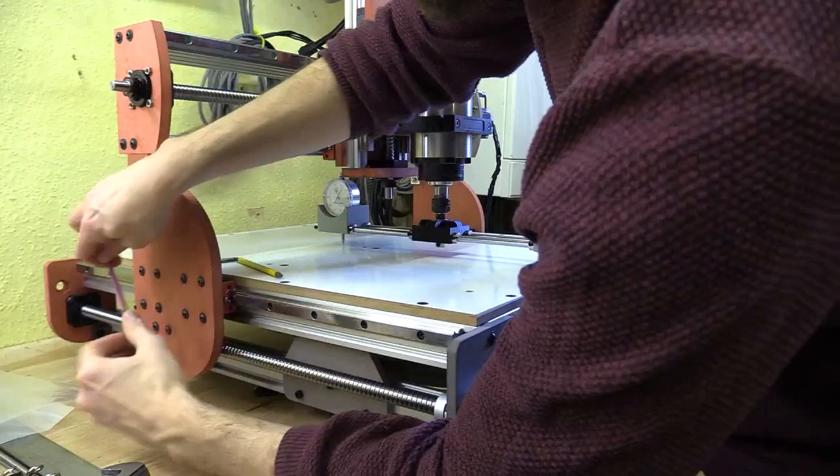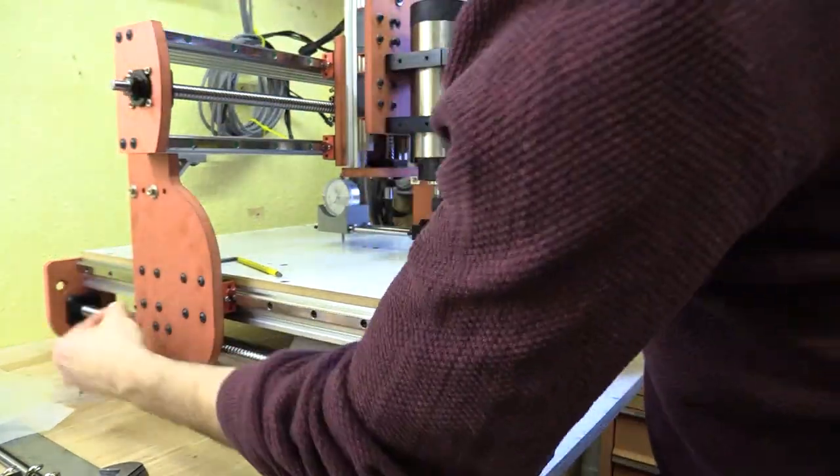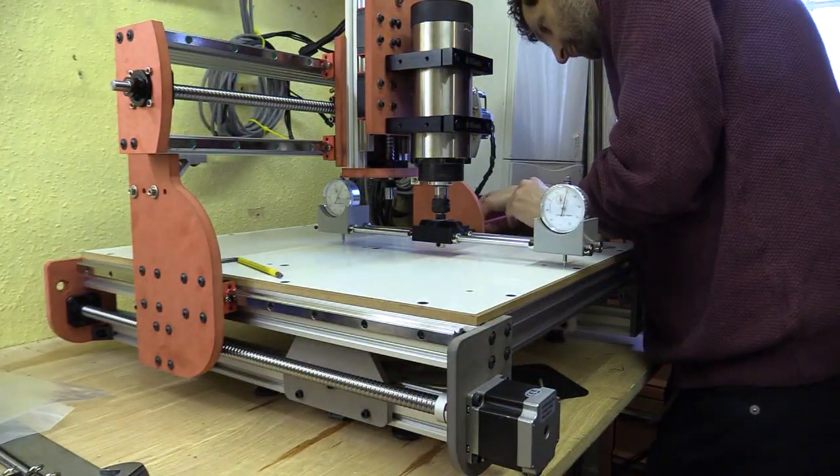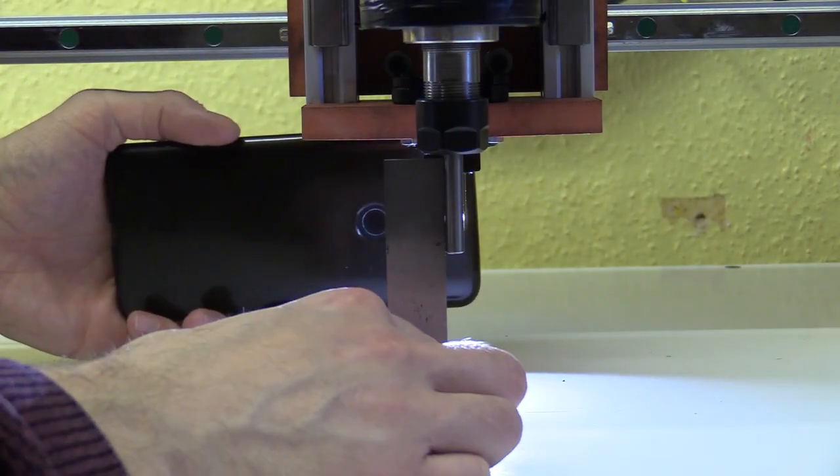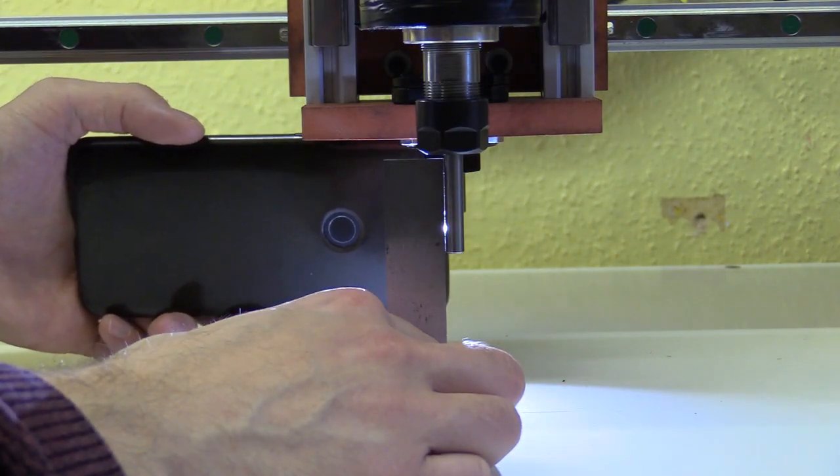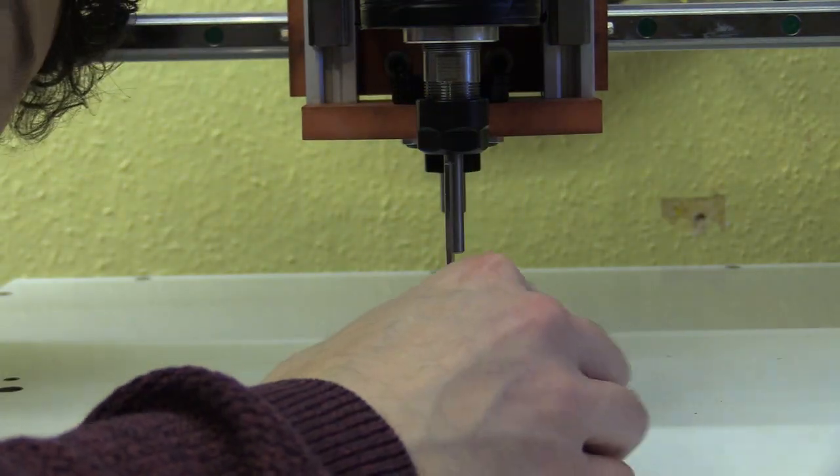I can then perform the same tramming process with the y axis. Once everything was square and tightened I did a visual check with a parallel ground rod in the collet and a small engineer square. I used the light from my phone to check the bleed between the edges of the tool and rod. It was pretty bang on.